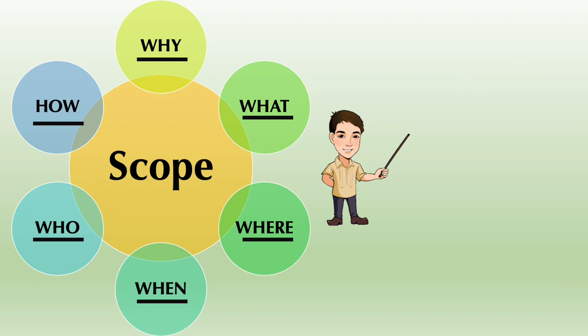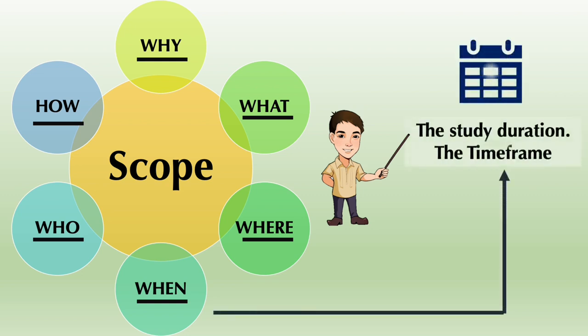The fourth W is when. The scope section of your research paper should highlight the time frame. Meaning, you need to reflect the duration of the research project. Answer the question, how long will the study be conducted? The specific month or months as coverage for your data collection.